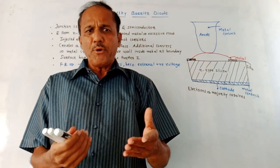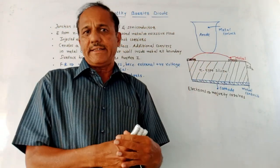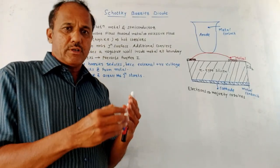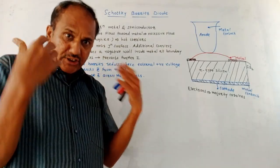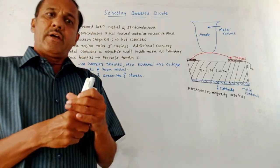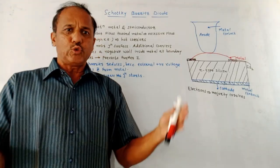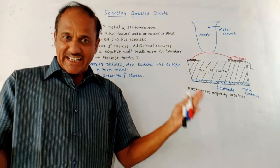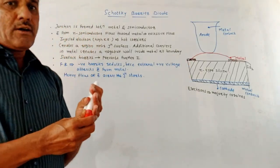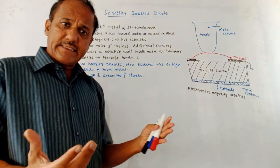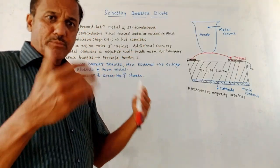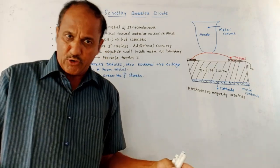From the exam, you may expect questions like: draw and explain the construction details and operation of the Schottky Barrier Diode, draw the VI characteristics and explain those characteristics, or compare Schottky Barrier Diode with a normal conventional PN Junction Diode.